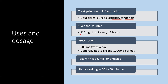Over-the-counter, it's 220 milligram tablets, generally 1 to 2 every 12 hours — be sure that you read the label specifically. Most people are going to take 1 every 12 hours. The prescription version is generally 500 milligrams twice a day. The ceiling dose is considered to be around 1,000 milligrams per day, though that varies depending on your condition and what your healthcare provider decides is appropriate. It is best to take it with food, milk, or antacids as that can reduce the potential for stomach issues. It starts working 30 to 60 minutes after you take the dose.